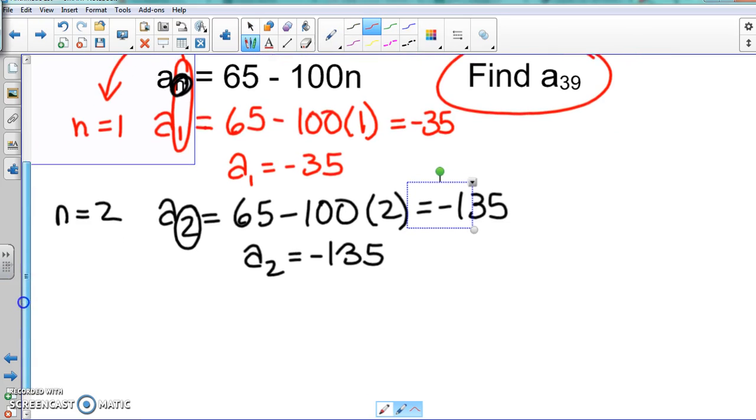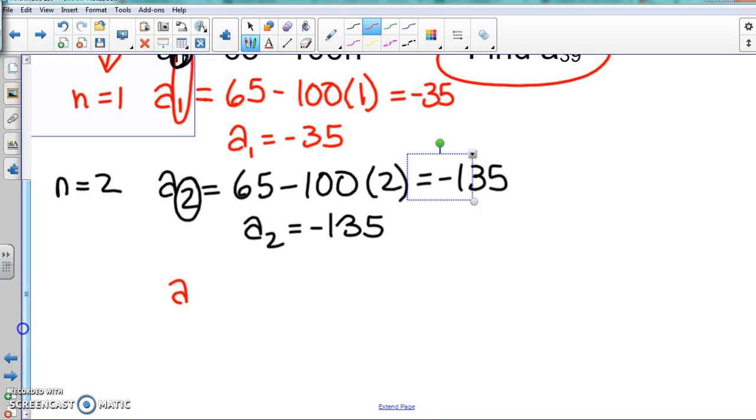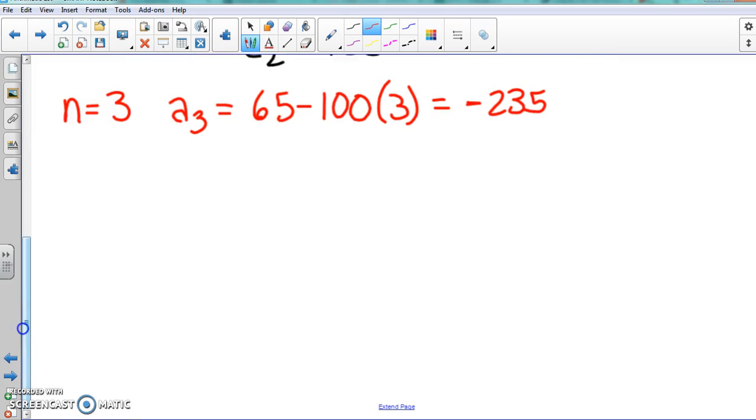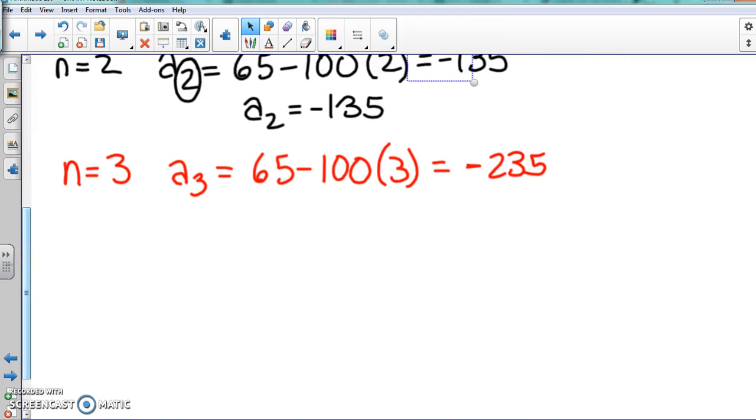We're going to do that all the way to 5. So a₃. Again, hopefully you should see that n equals 3 here, because that part, the 3 is in the n spot. So we do 65 minus 100 times 3. We put that in the calculator, that's negative 235. We're going to keep doing this over and over again until we get to a₅. So a₃ equals negative 235.